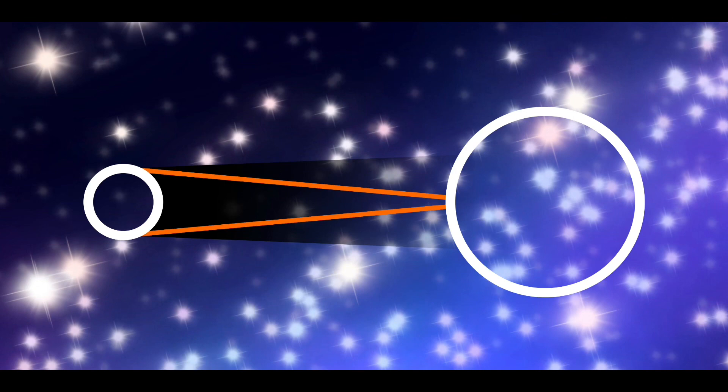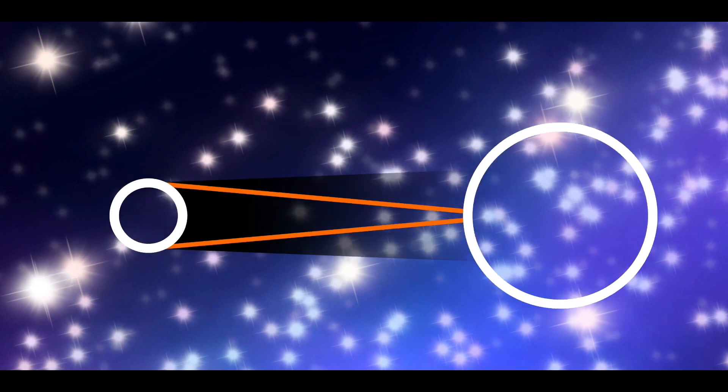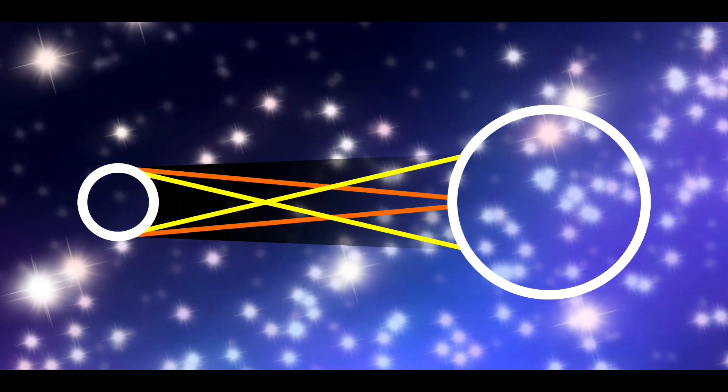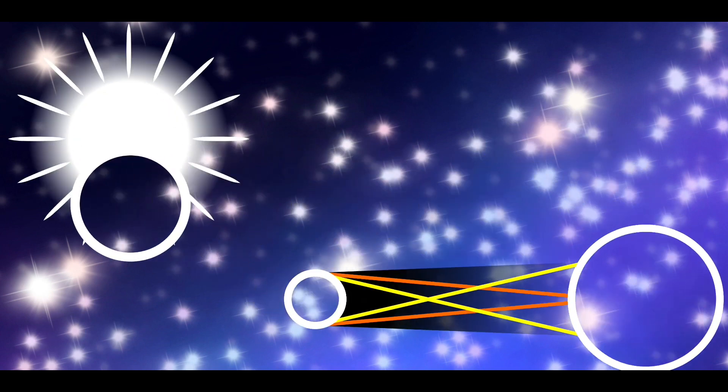Okay, listen. The Umbra is the shadow where light is completely blocked, a total solar eclipse. The Penumbra is the shadow where light is partially blocked, a partial solar eclipse.